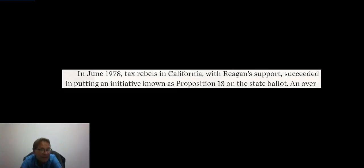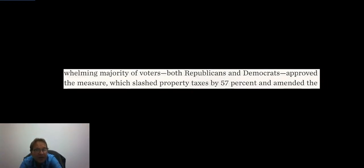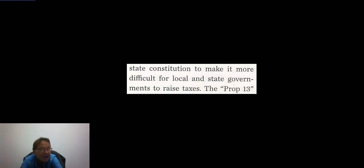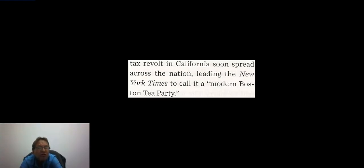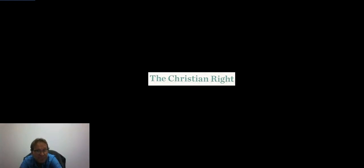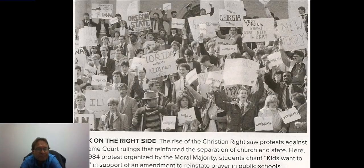There were also tax revolts in the late 1970s. In June 1978, tax rebels in California — with Reagan's support — succeeded in putting an initiative known as Proposition 13 on the state ballot. An overwhelming majority of voters, both Republicans and Democrats, approved the measure, which slashed property taxes by 57 percent. This is the beginning of California's budget problems. They amended the state constitution to make it more difficult to raise taxes. The Prop 13 tax revolt soon spread across the nation, leading the New York Times to call it a modern Boston Tea Party.